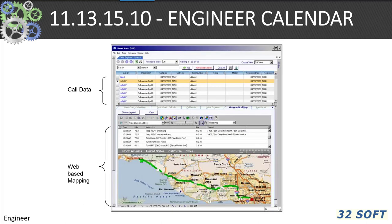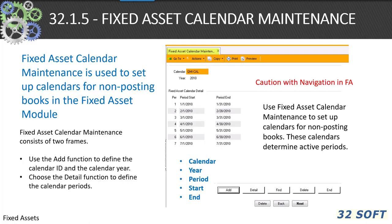In service and support, the engineer calendar is used for scheduling functions including visibility into engineering schedule for parts availability and travel distances. In 32.1.5 fixed asset calendar maintenance, this is used to set up calendars for non-posting books in the fixed asset module.